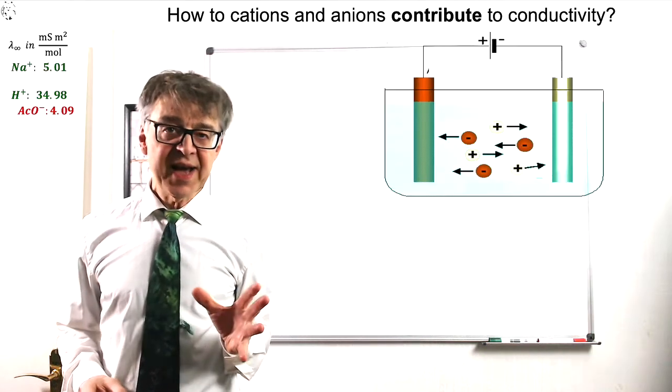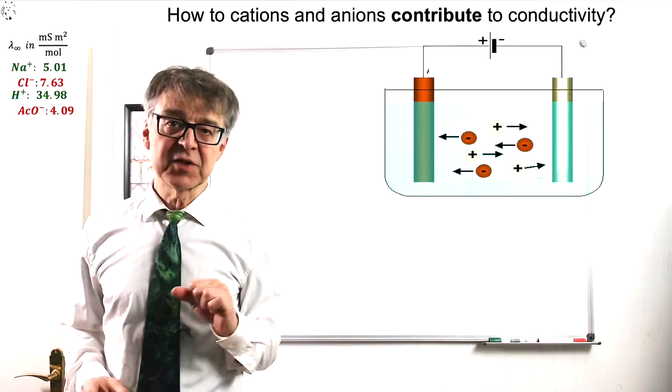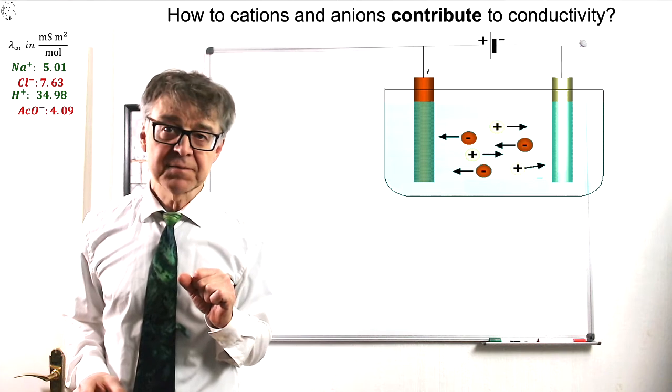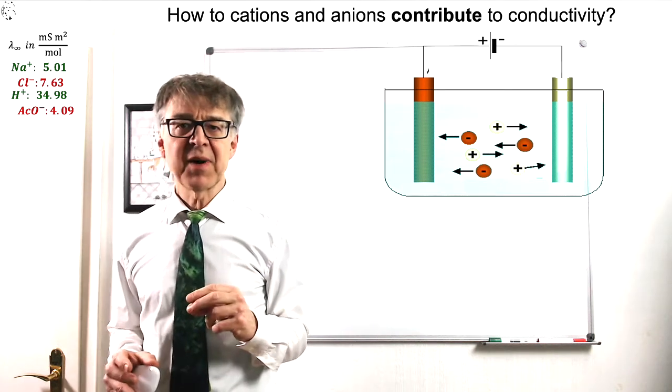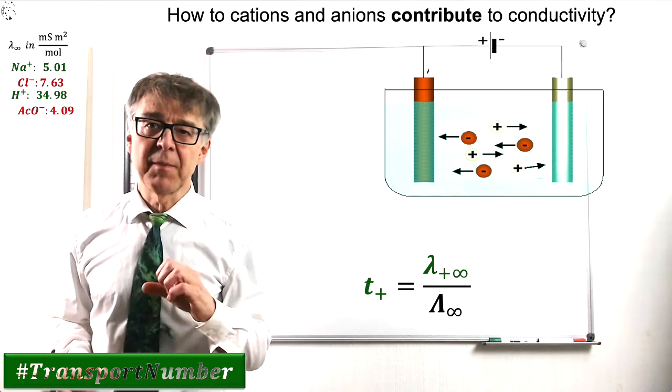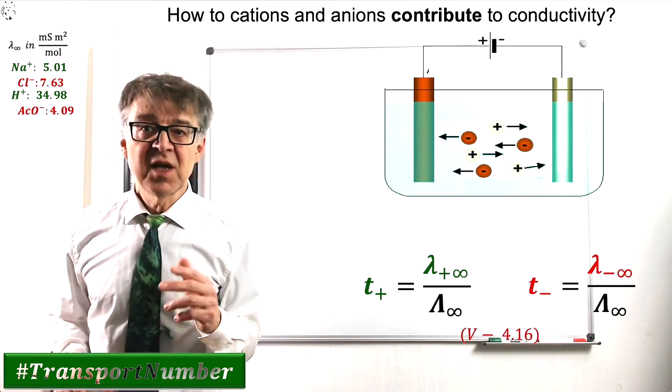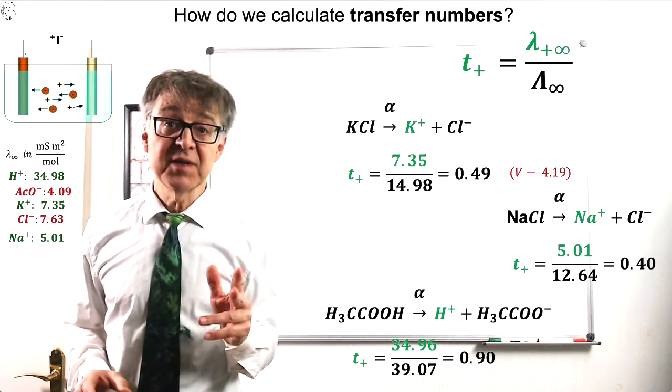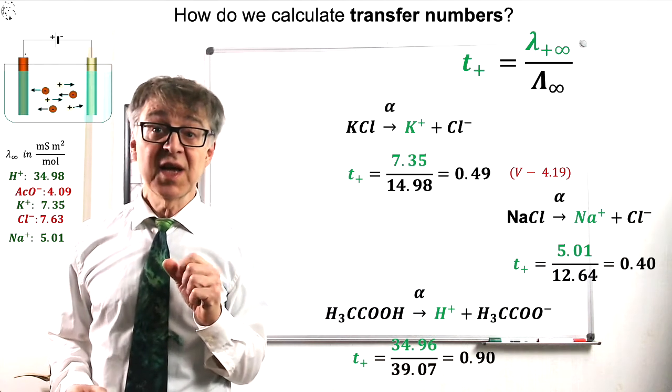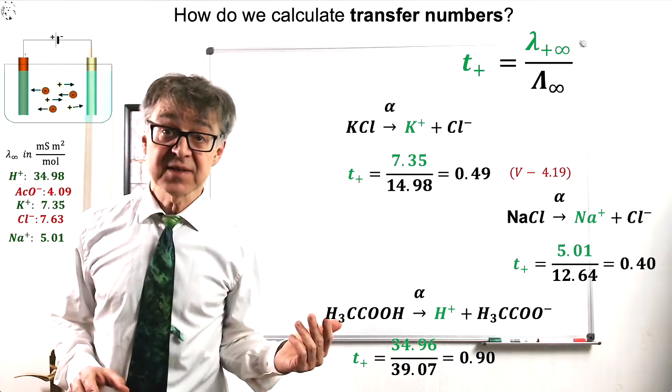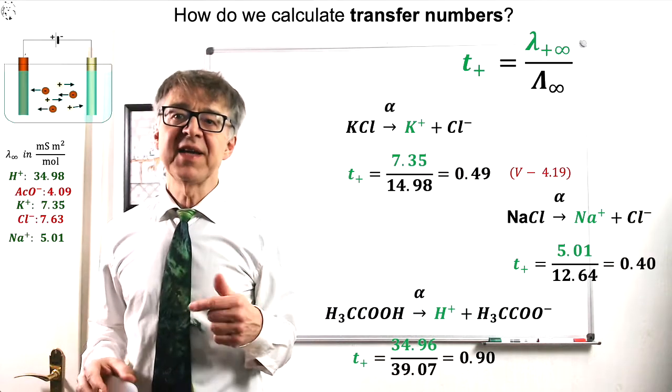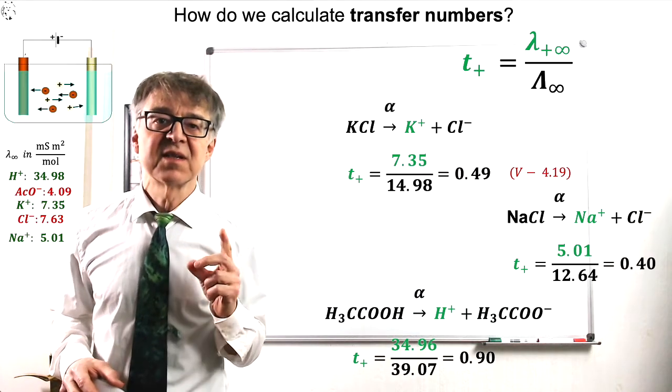As a rule, anions and cations do make different contributions to conductivity. This is quantified by the so-called transfer number T sub plus and T sub minus. Sixty percent of the current passing through the saline solution is carried out by the anions. The transfer number of the chloride ion T sub minus is 0.6.